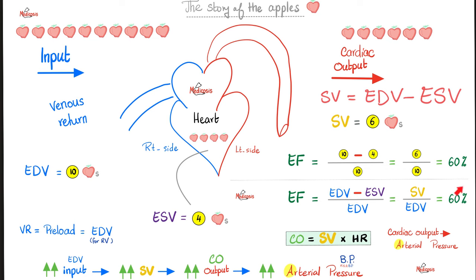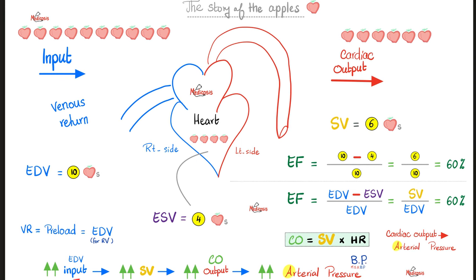If the heart receives more input — more preload, more venous return, more end diastolic volume — the stroke volume will increase. If I gave you 20 apples instead of 10, you can eject more. Assuming you still eject 60%, 60% times 20 is greater than 60% times 10, so cardiac output goes up because cardiac output equals stroke volume times heart rate. When cardiac output goes up, arterial blood pressure goes up.